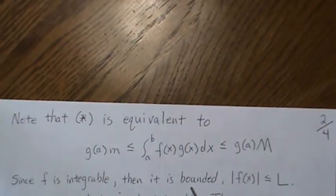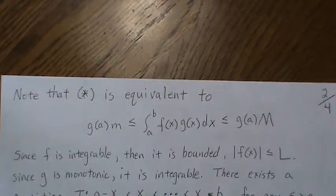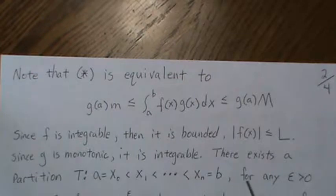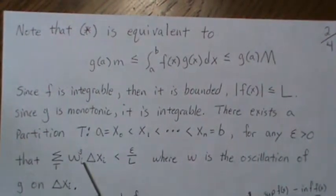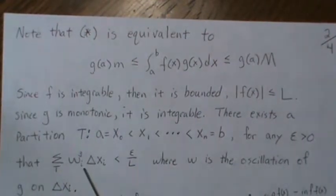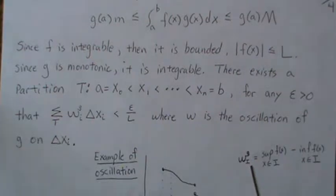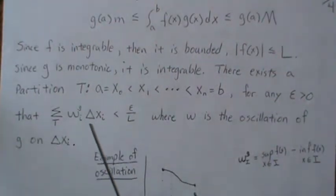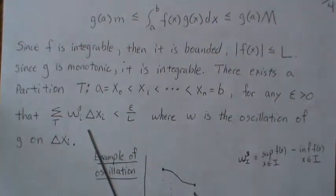Since F is integrable, it is bounded — let's call that bound capital L. And since G is monotonic, it's integrable. Then there exists a partition from A to B such that for any epsilon, we have this sum true, where W is the oscillation of G in those intervals. The oscillation of any interval I is the maximum value in that interval minus the smallest value in that interval.